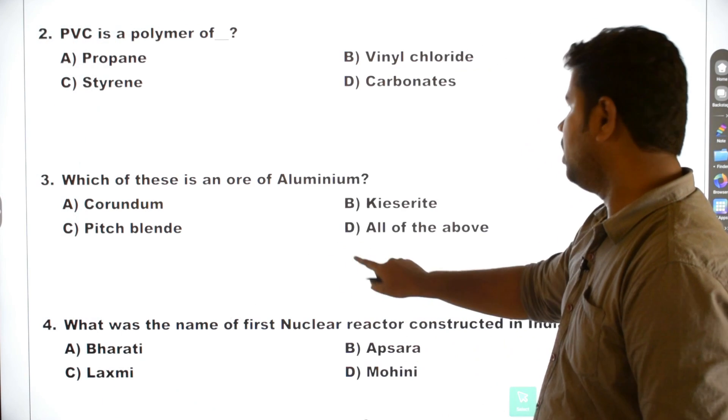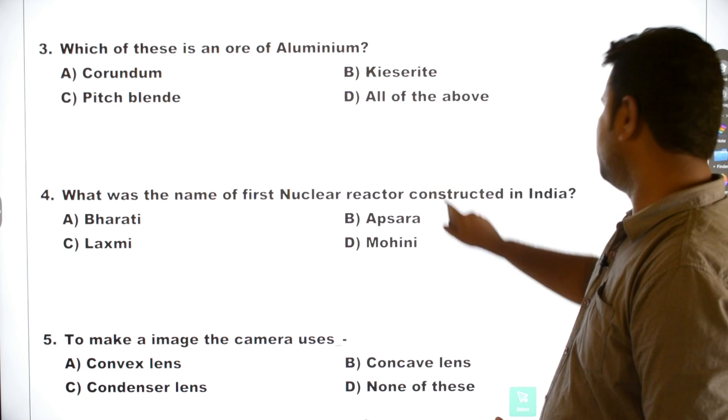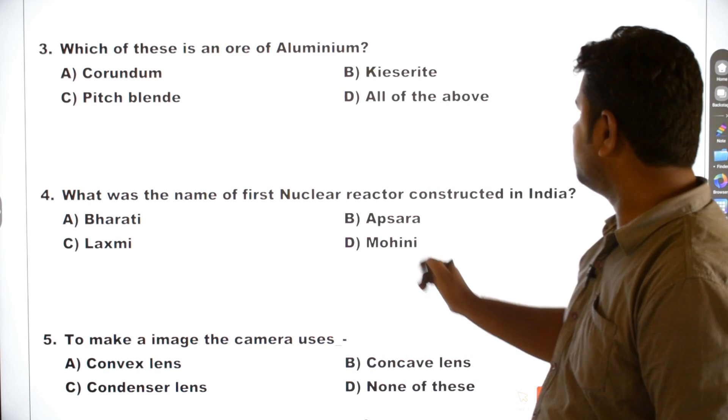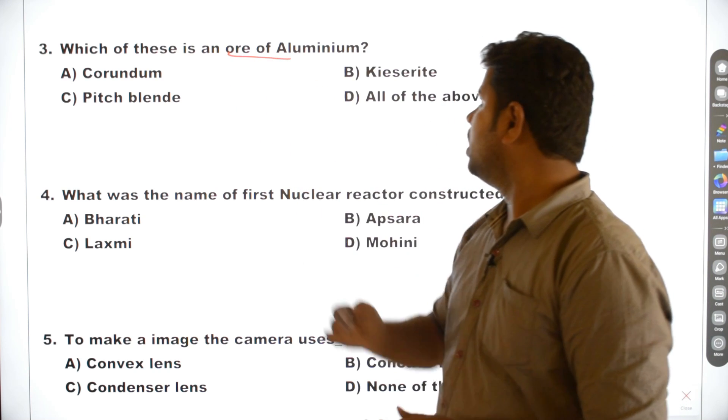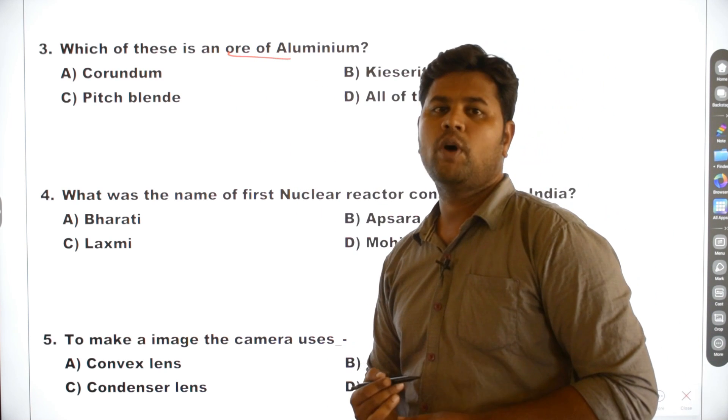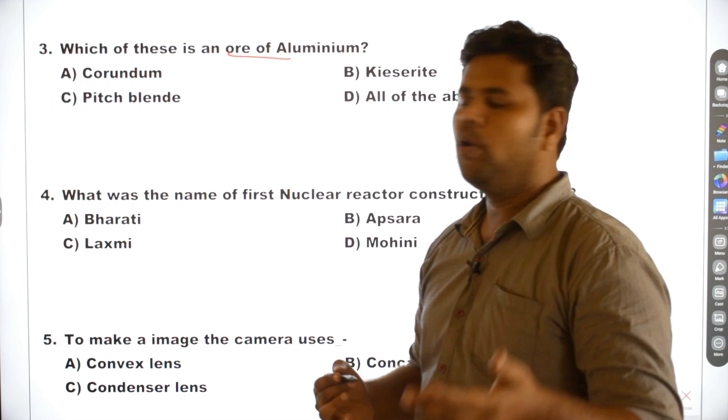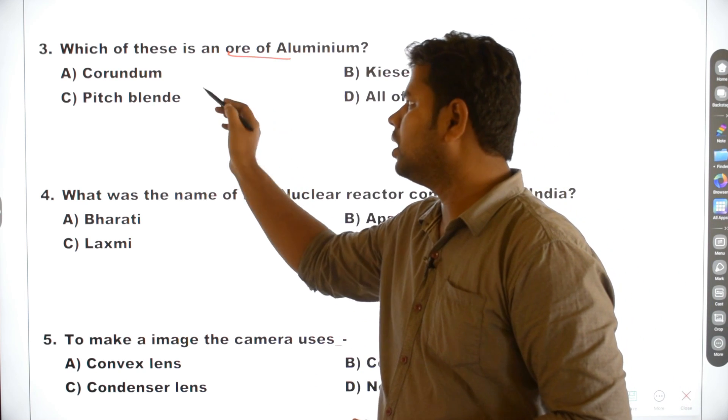Third one. Which of these is an ore of aluminium? The meaning of this is Bauxite. Bauxite, Cryolite, that is corundum.